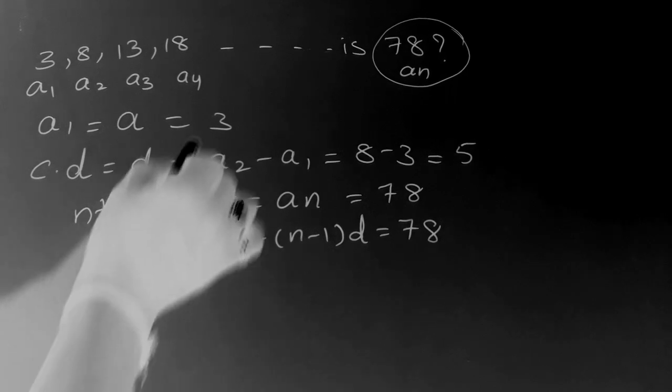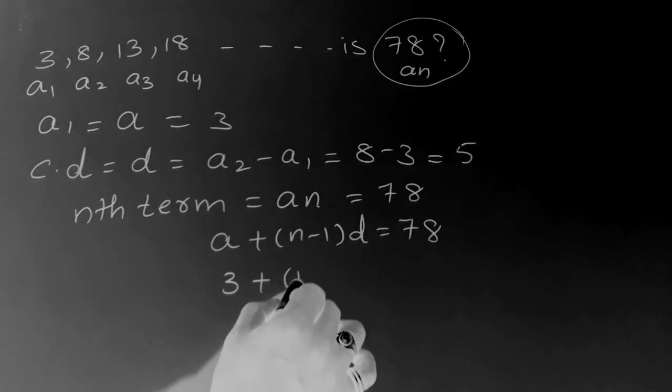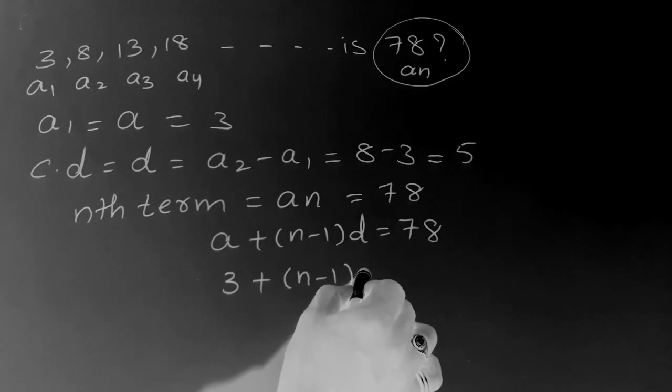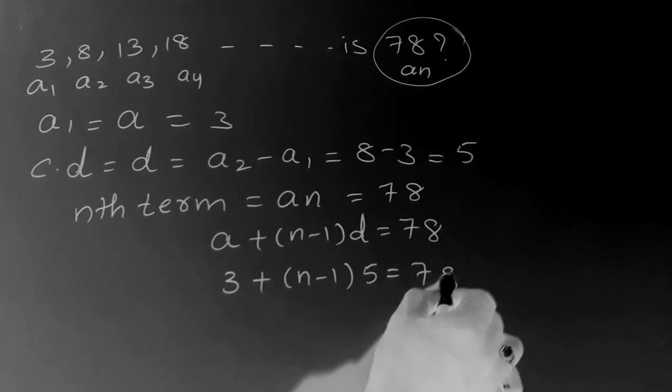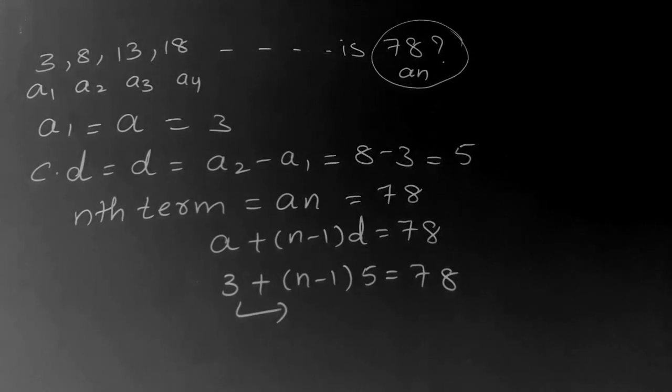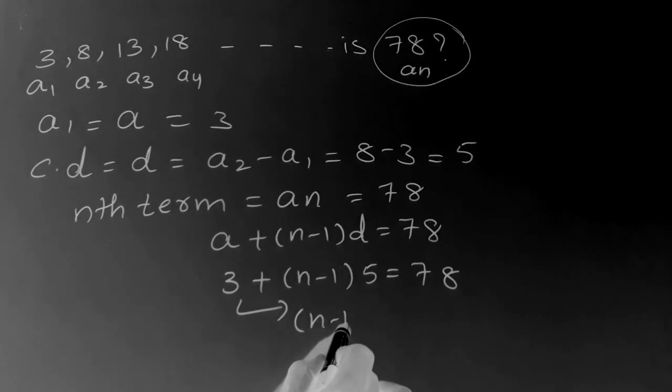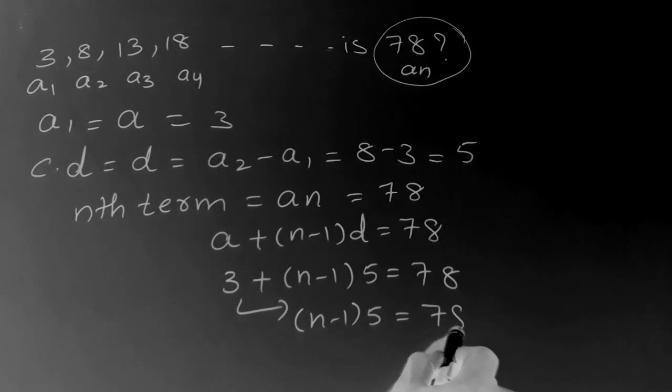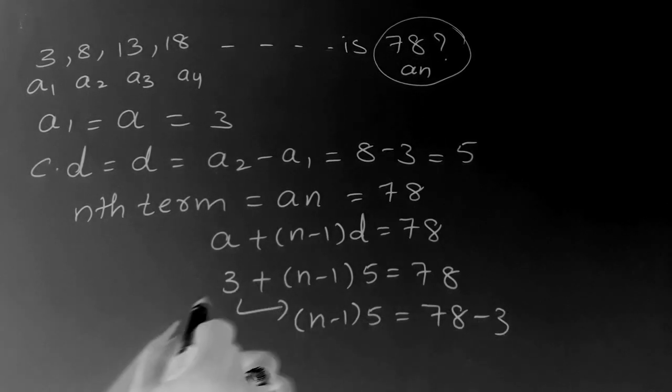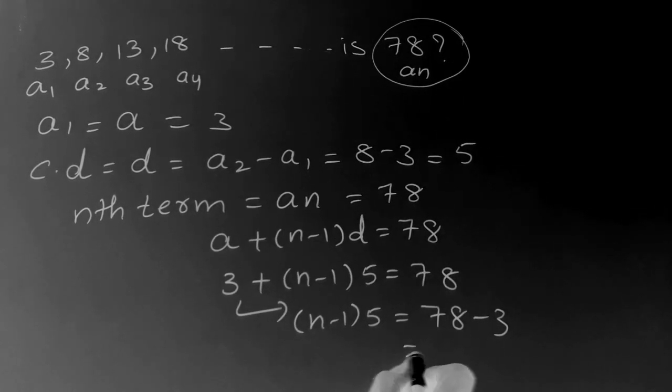Now we substitute a value, that is 3, n minus 1, d value is 5. Now send this 3 to right side. So transposing rule, if you send that 3 to right side, 78 minus 3, it has a plus sign, now it changes to minus sign. So what is left here? 78 minus 3 is 75.